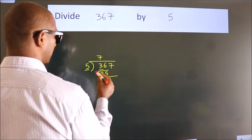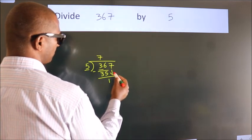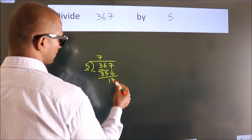Now we should subtract. We get 1. After this, bring down the beside number. So 7 down. So 17.